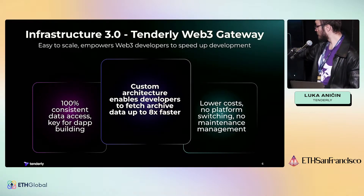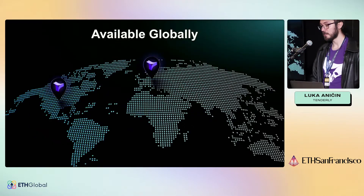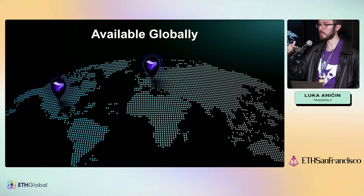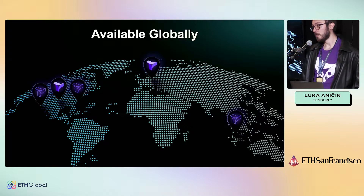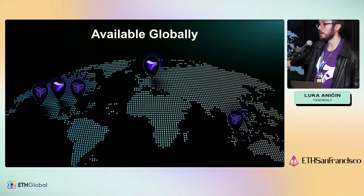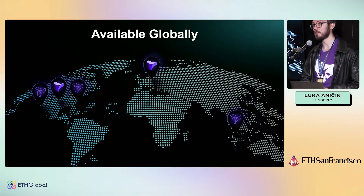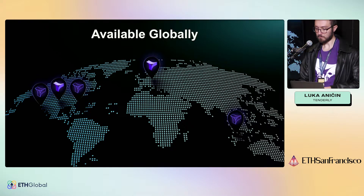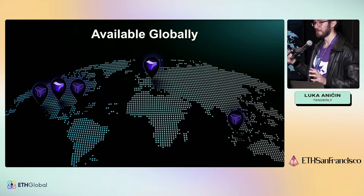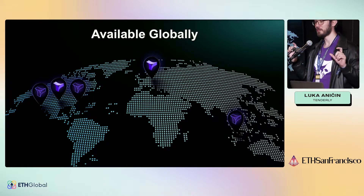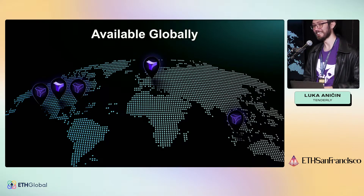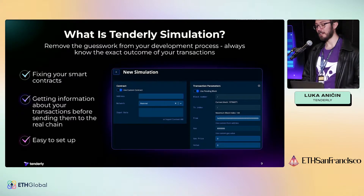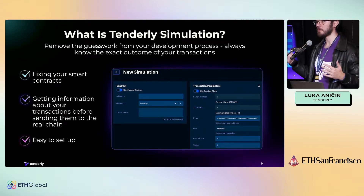For the first 1,000 registered users, it will be fifty dollars per month for life. We achieve eight times faster archive data access through global availability — nodes in the US and Europe now, with two more in the US and one in Asia coming in a couple of weeks. Wherever you are in the world, you'll have consistent speed. If you choose to apply this to your projects, you'll also get a special merch item — a vacuum cleaner for your keyboard.